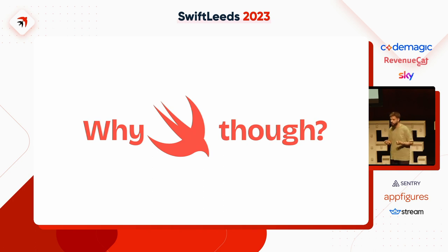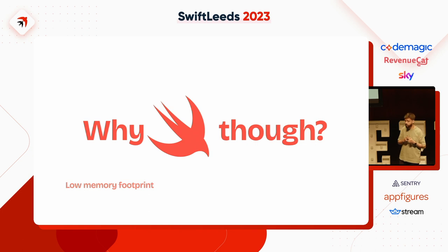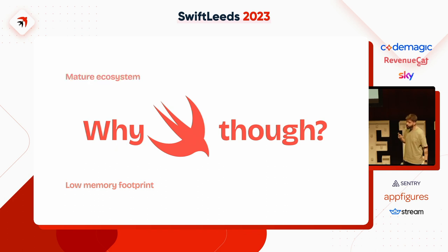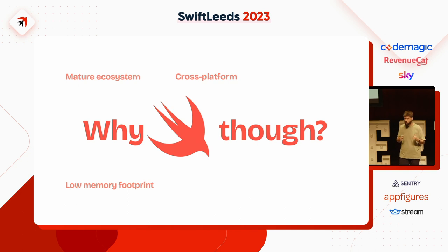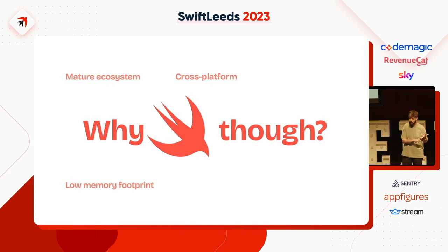One reason is that Swift has a very low memory footprint, which means you can run Swift applications on a wide variety of systems with very different specifications. It's got a very mature ecosystem and a very good developer experience. It's got a great open source community behind it, so you can make command line applications that not only run on macOS, but also on Linux — and believe it or not, on Windows too.